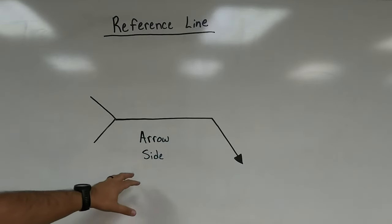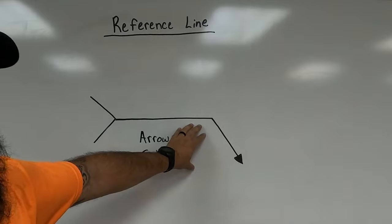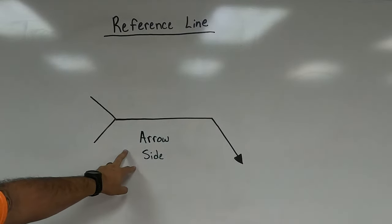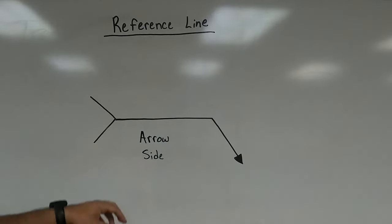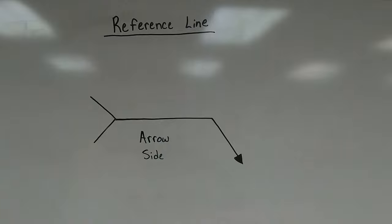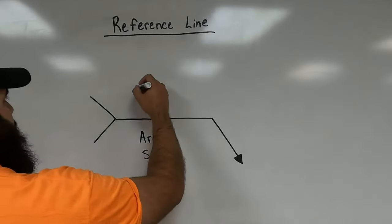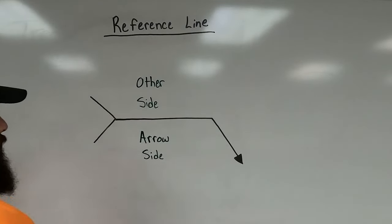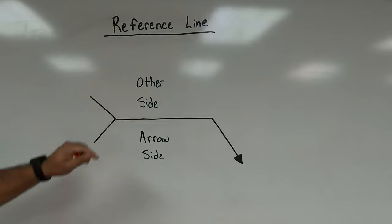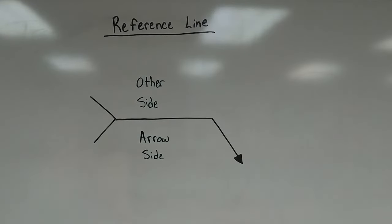Everything written underneath or on the bottom side of the reference line is called arrow side. Everything drawn on top of the reference line is called other side.